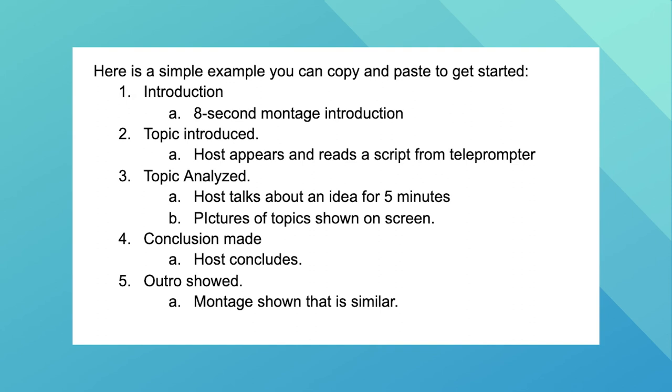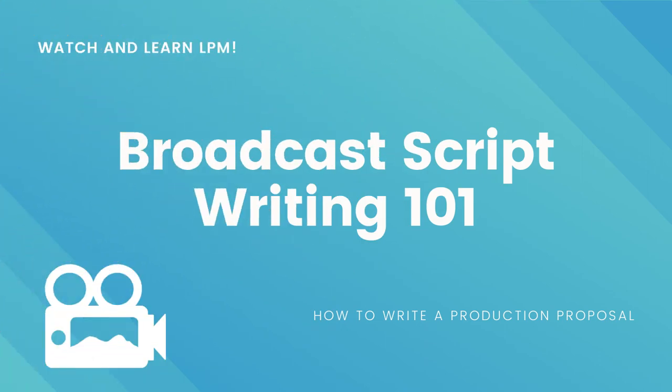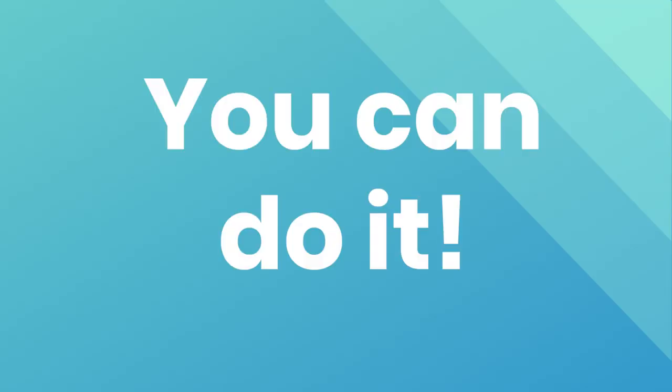If you're feeling really ambitious, you can do a production outline. If you have an outline that's a repeatable process, you can easily plug in different show topics. If you have a three-minute PSA you want to do, you can then write a script, which I'm going to cover in another class. Hopefully, by utilizing the production proposal, you know what you're going to do and you'll keep your process really simple. Thank you for watching — I can't wait to see your production ideas.